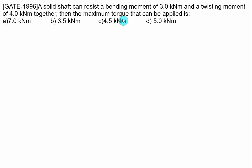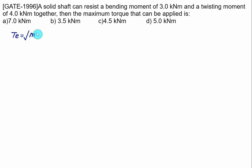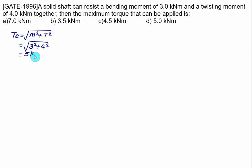A solid shaft can resist a bending moment of 3 kNm and a twisting moment of 4 kNm. We have to find out the maximum torque. The value of T equals the square root of M squared plus T squared, which is the square root of 3 squared plus 4 squared, giving us the square root of 9 plus 16 equals the square root of 25, which equals 5 kNm.